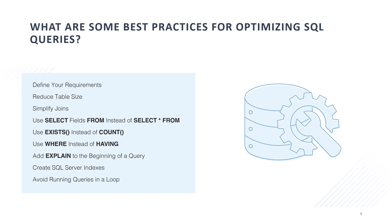What are some best practices for optimizing SQL queries? Best practices include indexing columns used in WHERE clauses, avoiding SELECT *, using proper join techniques, and minimizing the use of functions in WHERE clauses. Additionally, optimizing query execution plans, leveraging database query optimization tools, and profiling queries to identify performance bottlenecks are essential for improving query performance. Regular monitoring and tuning of SQL queries based on workload patterns and usage metrics also help optimize database performance and enhance overall system efficiency.